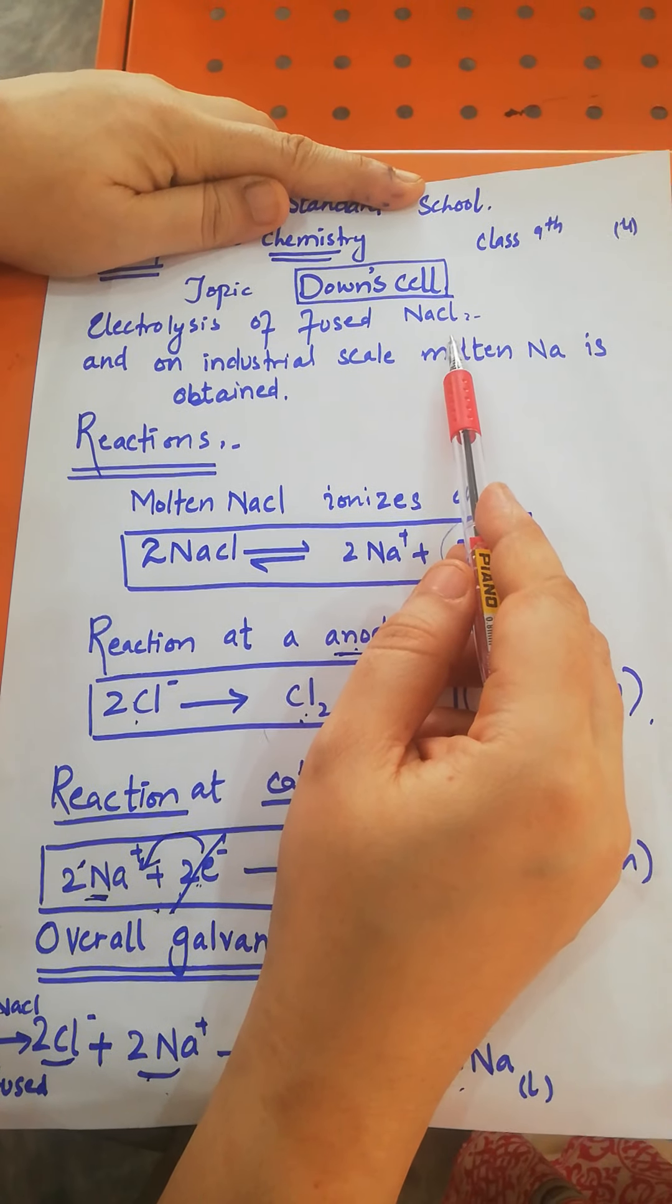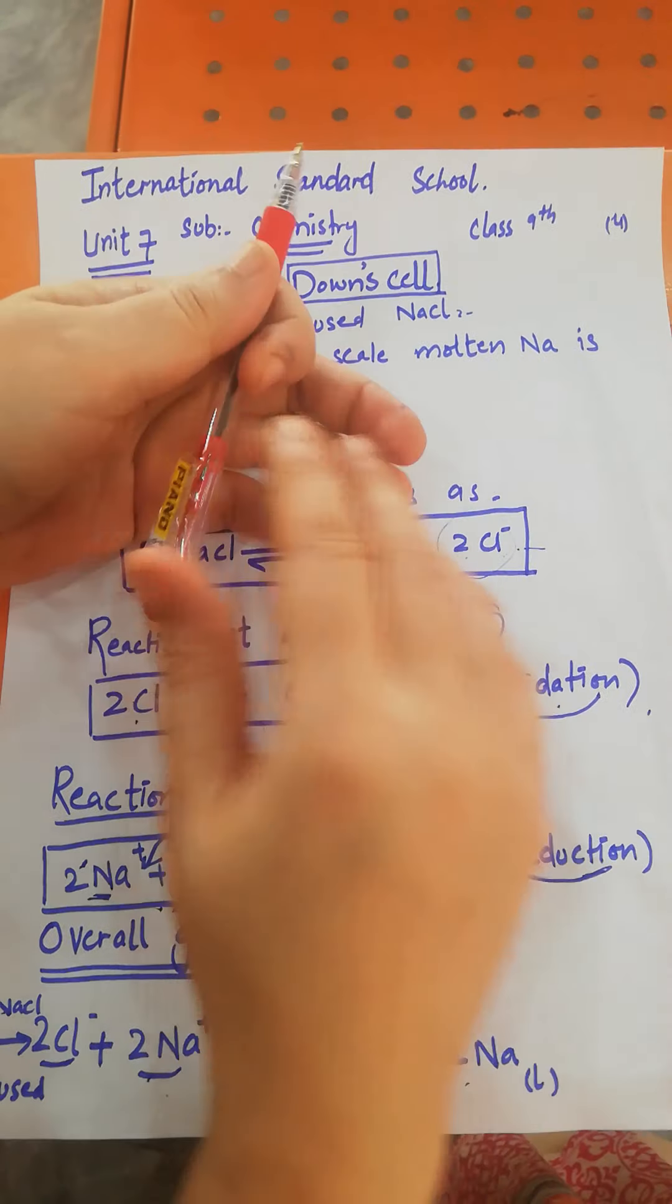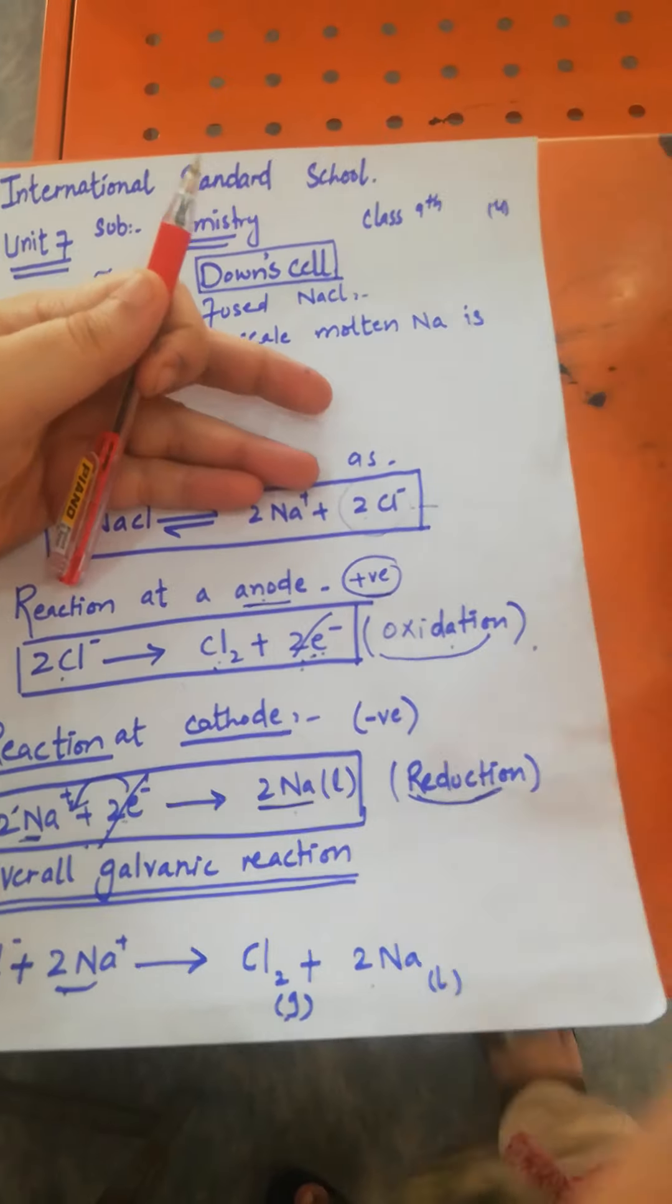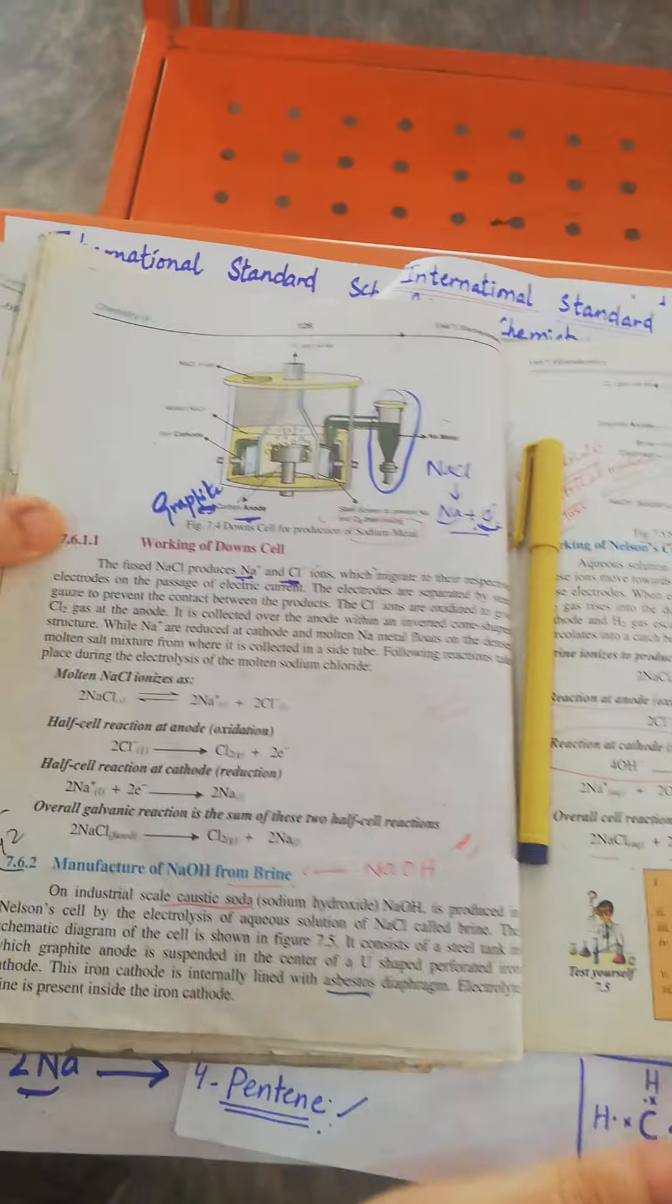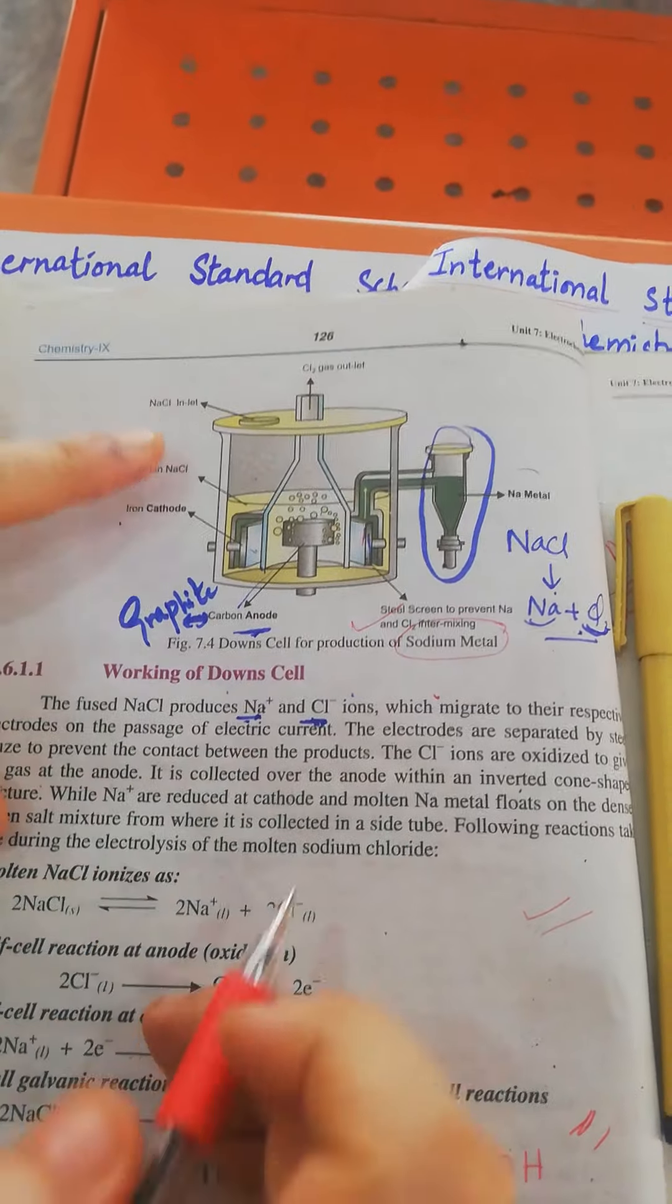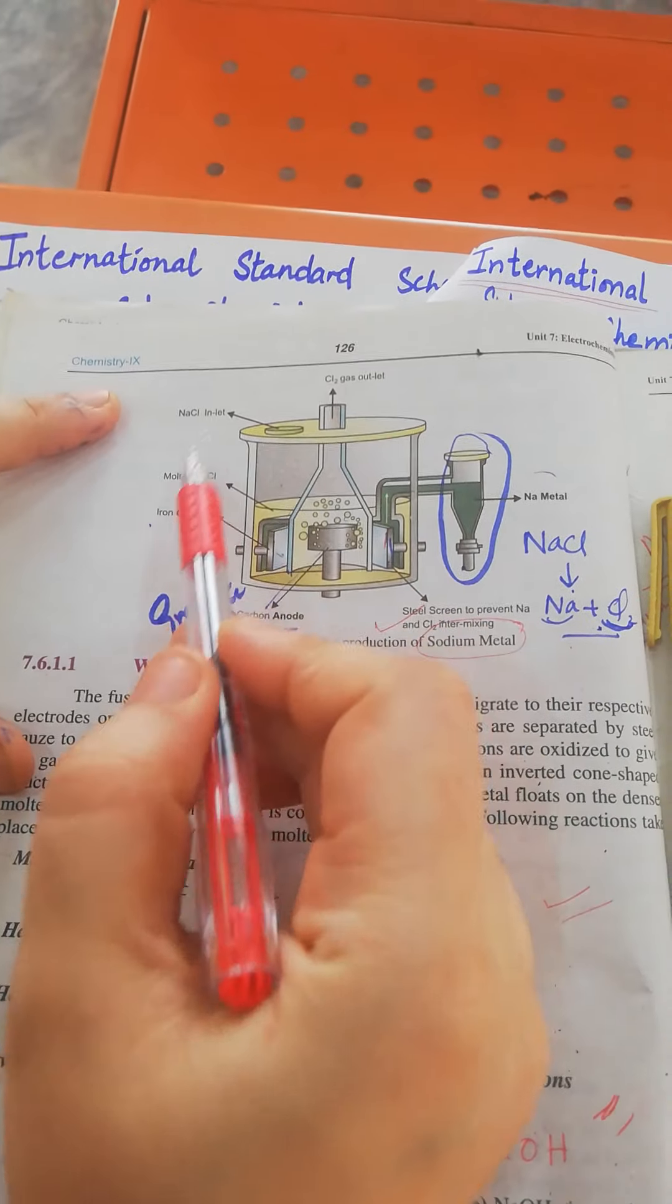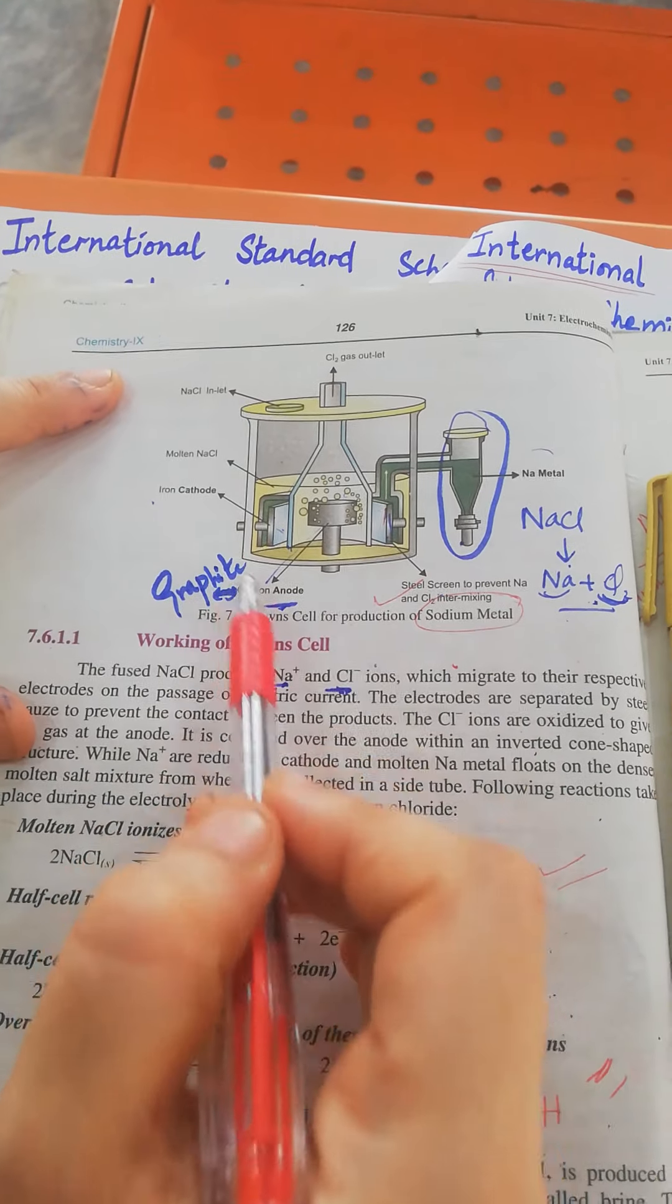What is the basic construction of this cell? From the book, page 126, through this diagram we can see the structure of the Down Cell.